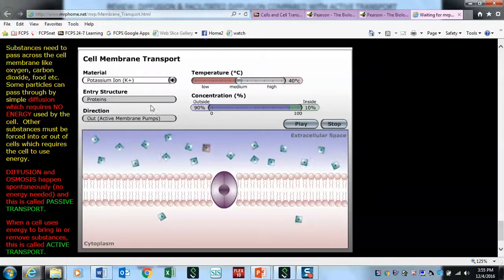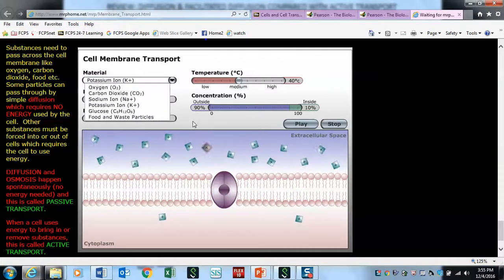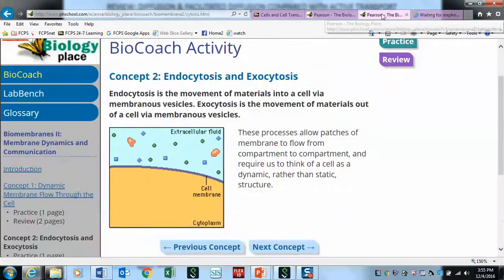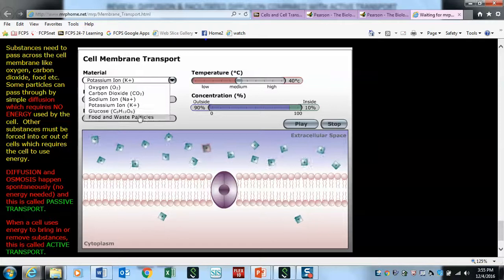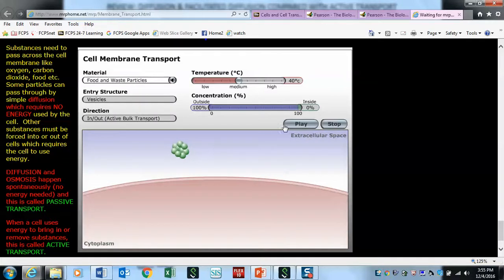The last thing is food and waste. Before we do that, we're going to have to zoom out. That's endocytosis and exocytosis - taking things in and getting rid of things. It may be waste, or this could be a secretory cell that goes somewhere else. Let's change this to food and waste, zoom out, and watch.